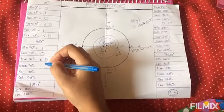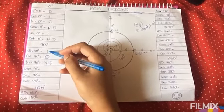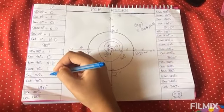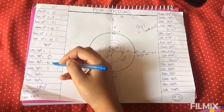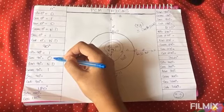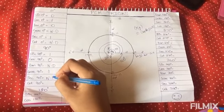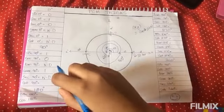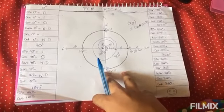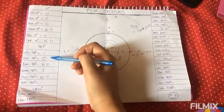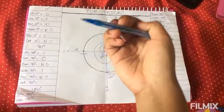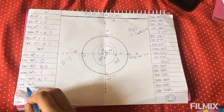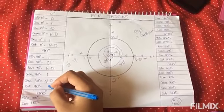Cosecant 90 degree is nothing but the reciprocal of sin 90 degree, which is reciprocal of 1, and it is 1 itself. Secant 90 degree is the reciprocal of cos 90 degree. Reciprocal of 0 is not defined. Cot 90 degree is the reciprocal of tan 90 degree. Tan 90 degree was 1 by 0. Reciprocal of 1 by 0 will be 0 by 1. Therefore, the value of cot 90 degree is 0 by 1, which is nothing but 0.